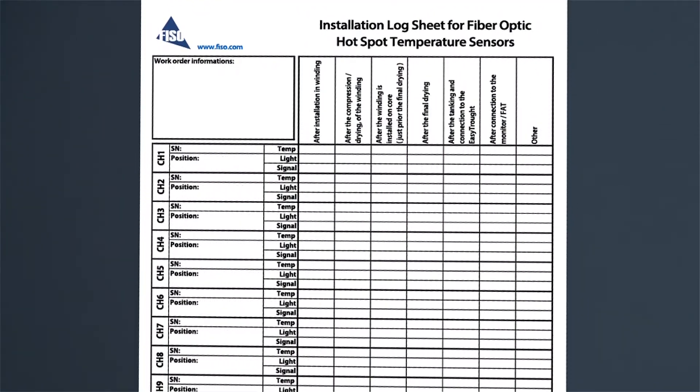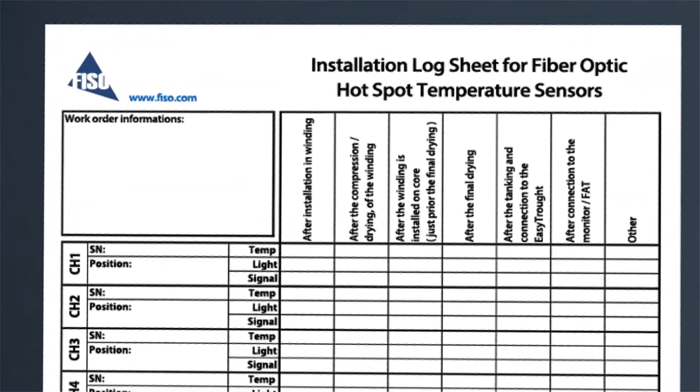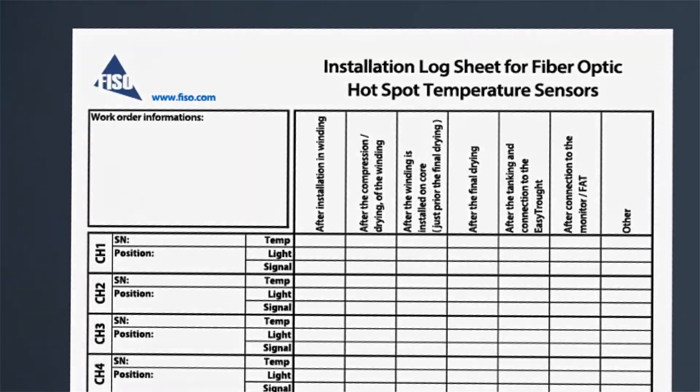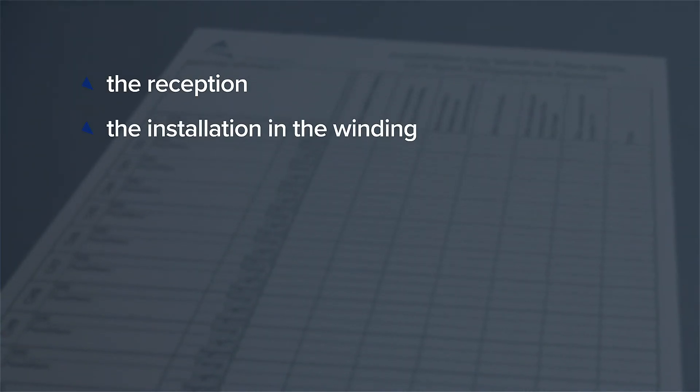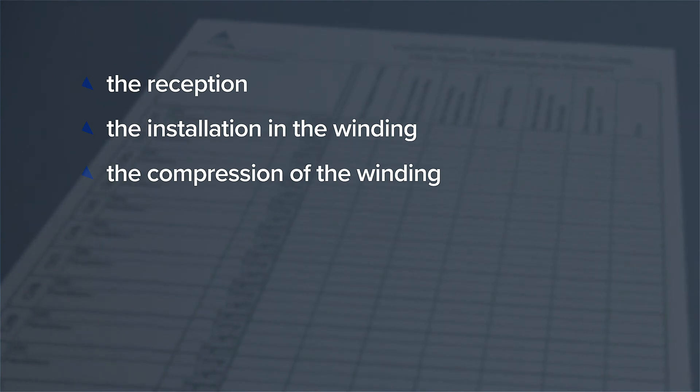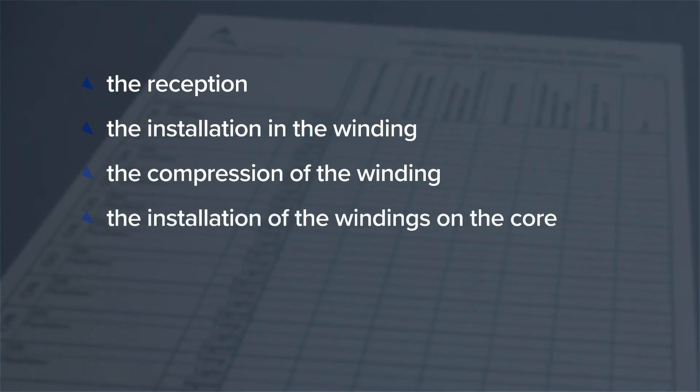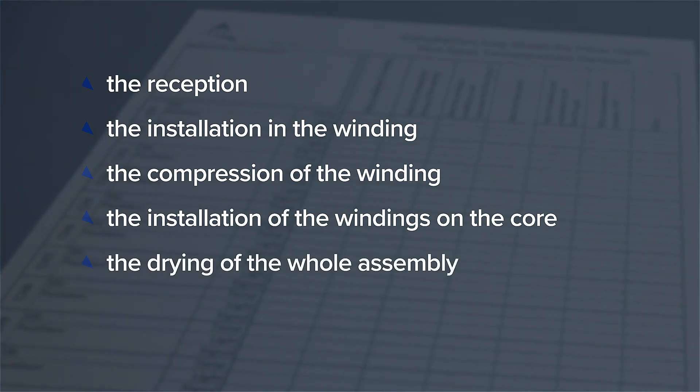We suggest keeping a record of the sensor's diagnostic values after each step of the manufacturing process, which includes the reception, the installation in the winding, the compression of the winding, the installation of the windings on the core, the drying of the whole assembly, and finally, the tanking. You can find a customizable log sheet on the EasyTest2 resources webpage accessible through the QR code.